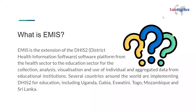You may be asking yourselves: what is EMIS? EMIS is an extension of DHIS2. As we already know, DHIS2 is used for the health sector, but DHIS2 has decided to extend to the education system too. It will be able to collect, analyze, and visualize individual data and aggregated data for educational institutions.